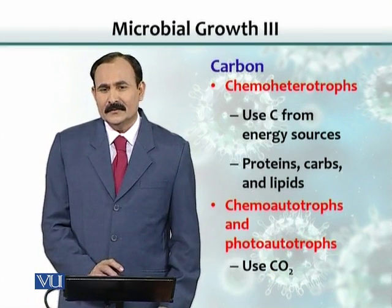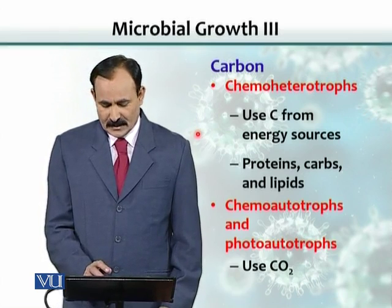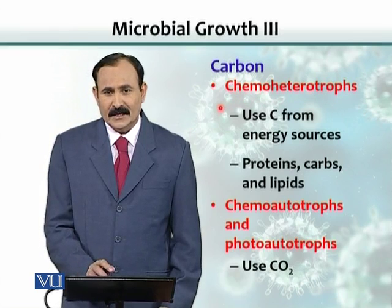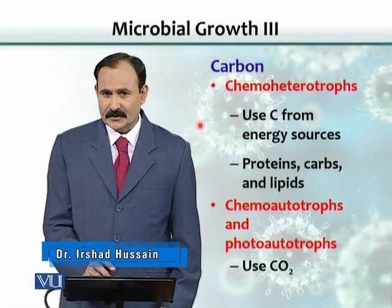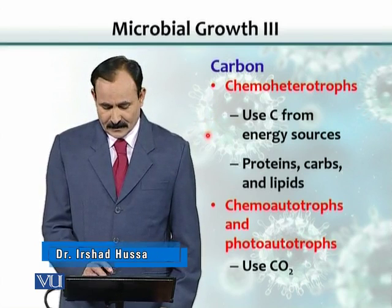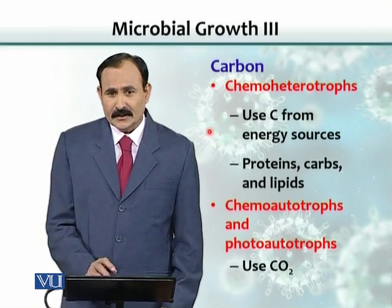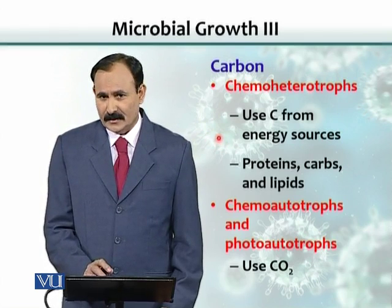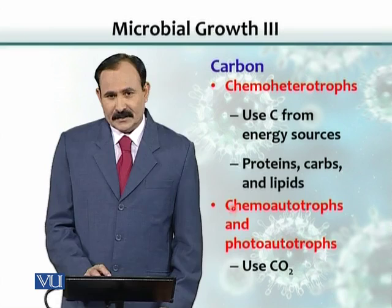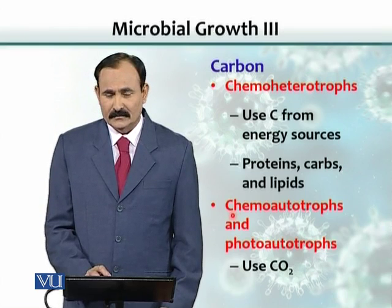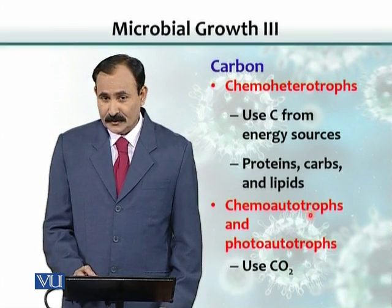On the basis of carbon, we categorize microbes into different groups. Chemoheterotrophs are the ones that derive their energy source from chemicals — organic or inorganic chemicals — and also use carbon from organic or inorganic compounds. Another group derives their energy from inorganic compounds, and their carbon source is carbon dioxide.